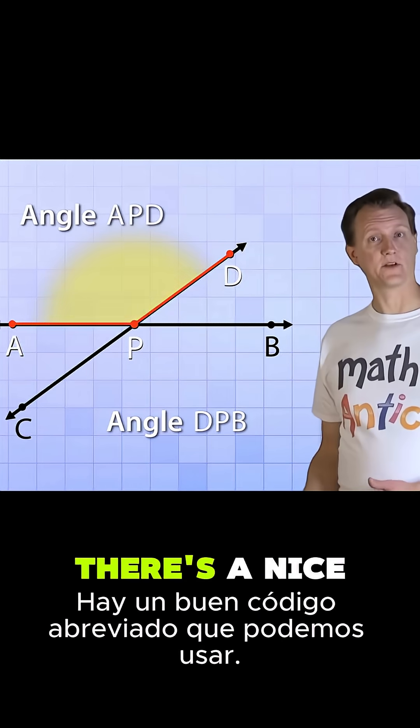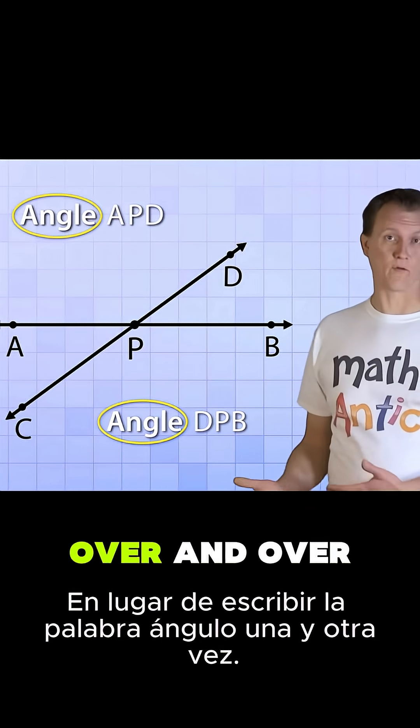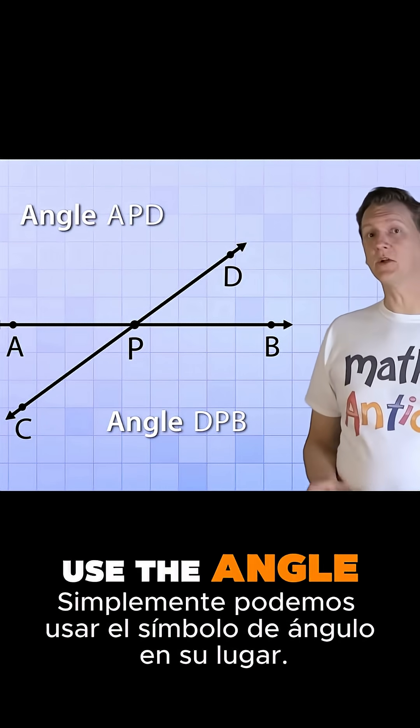Now when naming angles, there's a nice shorthand that we can use instead of writing the word angle over and over again. We can just use the angle symbol instead, which looks like this.